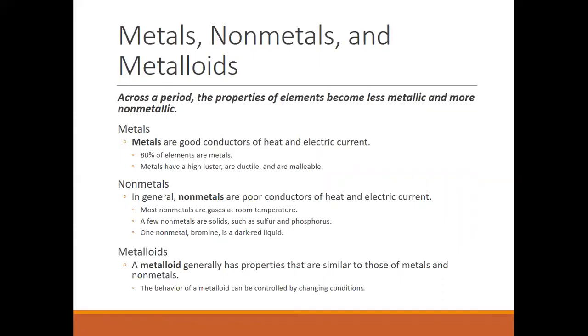The metalloids are going to have some properties that are metallic and some properties that are non-metallic. And what's neat about that and what allows us to have so many different applications for the metalloids is that we can actually control or manipulate the behavior of those metalloids by changing the conditions. But just like in all the other properties, as you move across the period, the properties are changing. And for the metallic properties, the elements to the left of the periodic table are going to have the most metallic properties. And as you move across, they're going to become less metallic and actually more non-metallic.